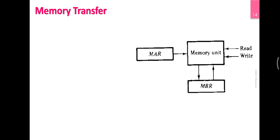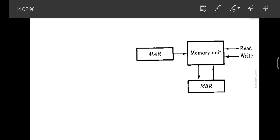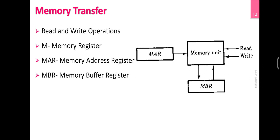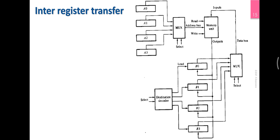This is memory transfer involving a memory unit, MAR and MBR — also called MDR. There are two types of operations: read and write. Memory data is transferred down to MBR. When R is active, R1 is read. In inter-register transfer, A1 and A0 are registered, B1 and B0 are registered, and data is transferred through memory. The memory transfer table shows the final part.